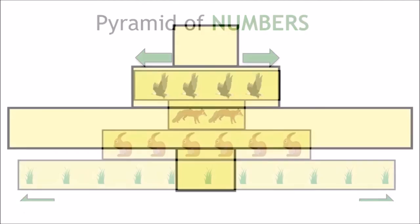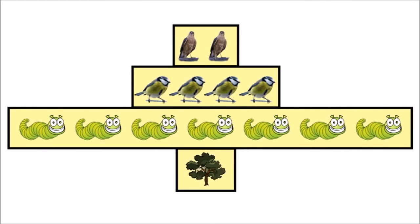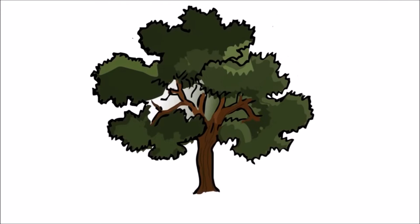Pyramids of numbers can end up looking a bit wonky. For example, if one primary producer can feed lots of primary consumers, like an oak tree which feeds lots and lots of little caterpillars.